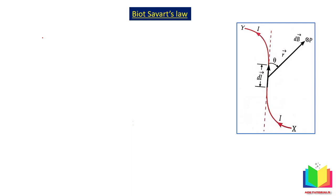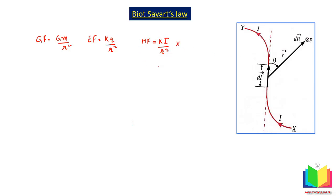The first field we know is the gravitational field, given by Newton as Gm over r squared. Then Coulomb gave the electric field as kq over r squared. Biot-Savart also wanted to give such an equation relating the magnetic field to current. They assumed magnetic field should be proportional to current and inversely proportional to r squared, but when they took observations the results were not correct. So they made modifications and experiments and arrived at a new equation. Biot-Savart's law is an experimental law.